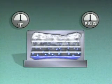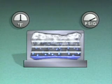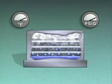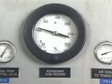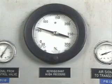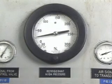Pressure has a similar effect on condensing temperature. When the pressure is increased, steam condenses at a higher temperature, and when the pressure is decreased, steam condenses at a lower temperature. The same effect occurs with refrigerants in refrigeration systems. When the refrigerant is at a higher pressure, it boils or condenses at a higher temperature. When the pressure of the refrigerant is reduced, it will boil or condense at a lower temperature.